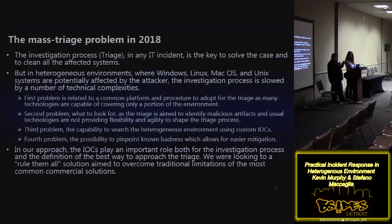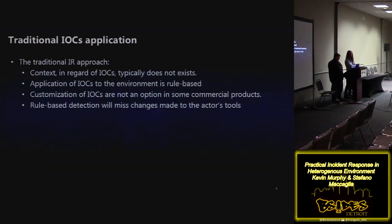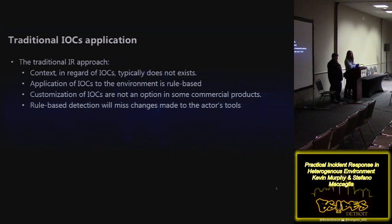In our approach, we want to take all the IOCs that play an important role in our investigation and have a single solution where we can touch every single machine on the network and find any known indicators of compromise. The traditional IR approach treats IOCs as contacts — generally we get an IP address or an MD5 and are told to search for it, but we have no idea where that information came from. If you're on some government lists where you get indicators of compromise, you're not 100% sure where those indicators are coming from.